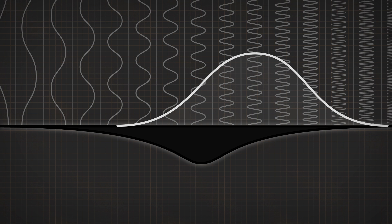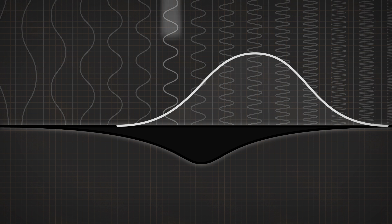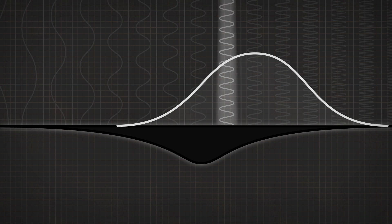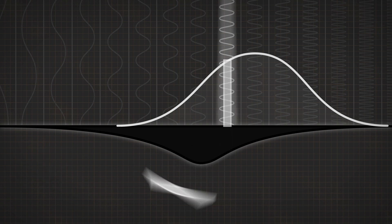So for example, light of this wavelength will send a signal this strong into the brain, and light of this wavelength will send a signal this strong into the brain. This area in here is the brain, let's say.